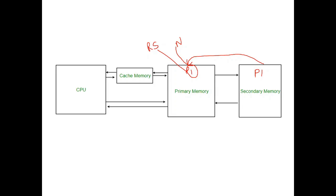The processes which are ready for execution and reside in main memory are called ready-state processes. Suppose we want to execute processes P1, P2, and P3 — all these processes have to be loaded from secondary memory into main memory. They are all waiting in main memory for execution. Since there is only one CPU, only one process can be executed at a time. Based on various scheduling algorithms, processes are selected from the ready queue for execution by the CPU.